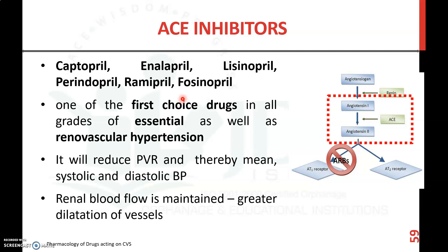ACE inhibitors are angiotensin converting enzyme inhibitors. This enzyme is responsible for the conversion of angiotensin 1 to angiotensin 2. Angiotensin 2 binds with the angiotensin receptor and produces vasoconstrictive action and a rise in BP. By inhibiting ACE, we can inhibit the formation of angiotensin 2 and thereby prevent vasoconstriction. Important drugs include captopril, enalapril, lisinopril, perindopril, ramipril, and fosinopril — all ending with 'pril'.